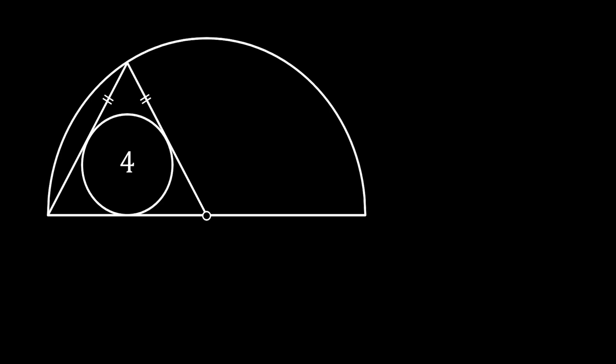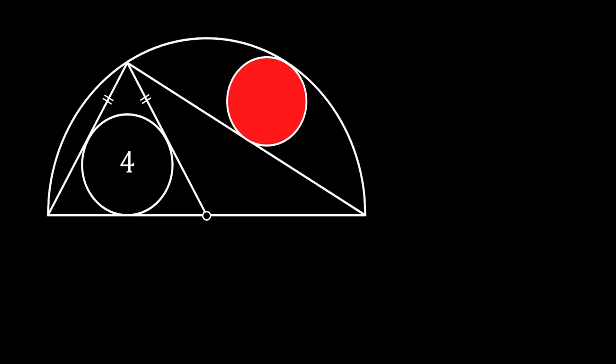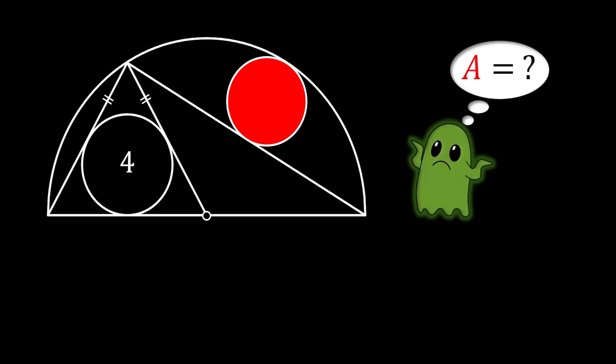Now we will connect the apex of our triangle with the right vertex of our half circle, and finally in the upper part of our half circle, in this newly constructed segment, we will inscribe the biggest possible circle, as you can see on the sketch. The question is: can we somehow calculate the area of this inscribed red circle?